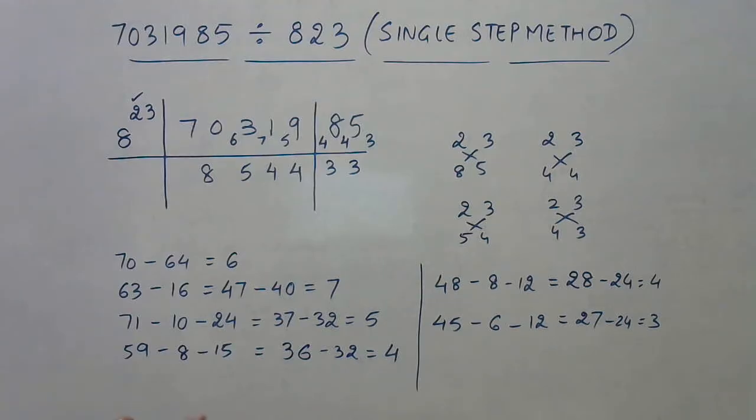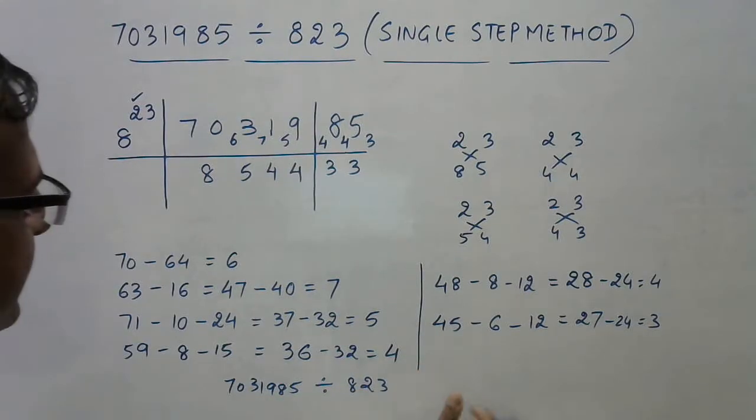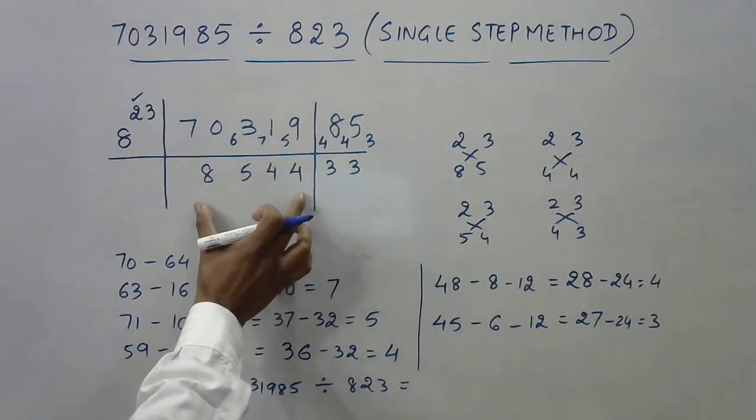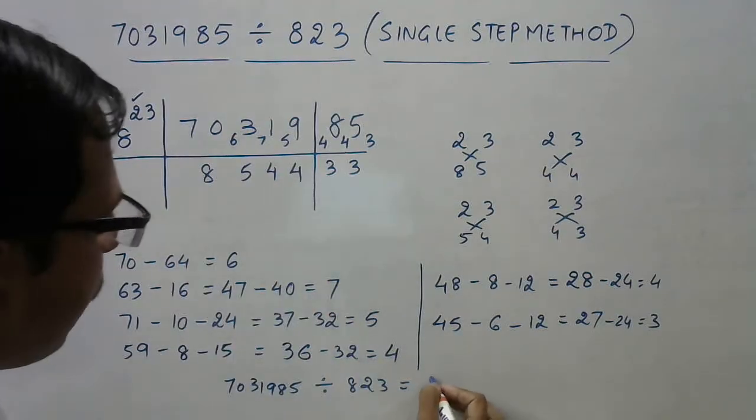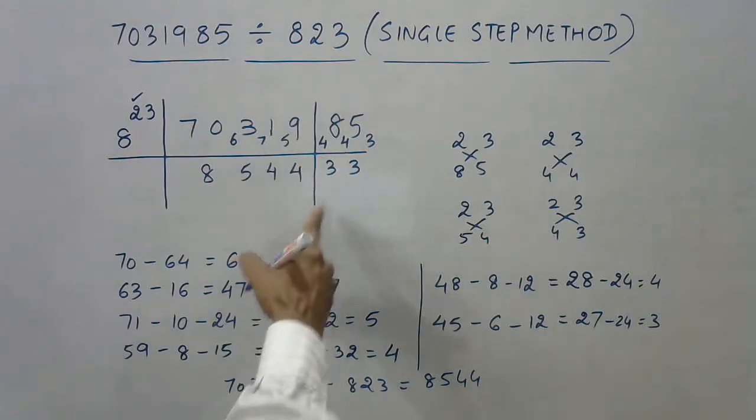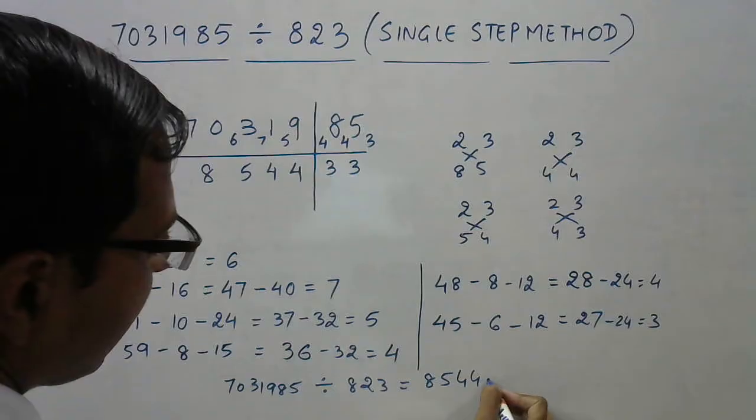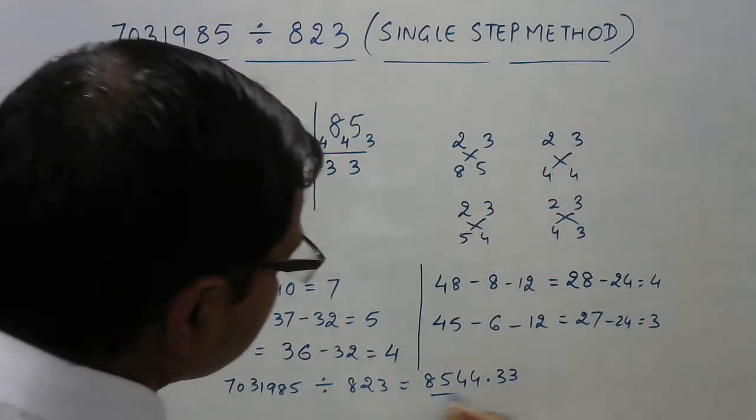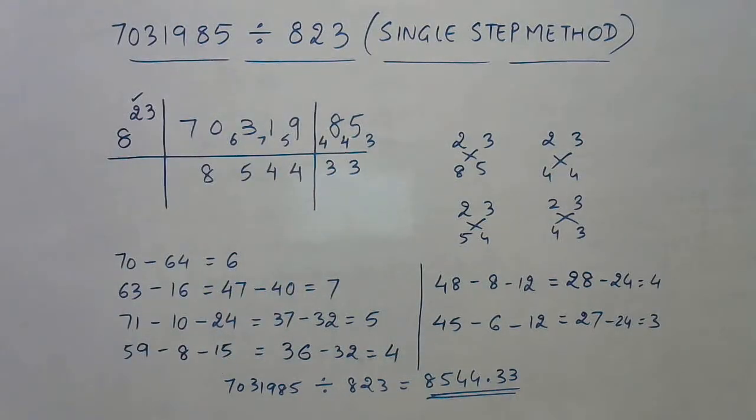Now after these two digits, I have already found out here. So my answer has already been obtained. 7031985 divided by 823—what is the number obtained in the center? 8544. The number obtained after this vertical line is 33, so that comes after the decimal place. My answer is 8544.33.